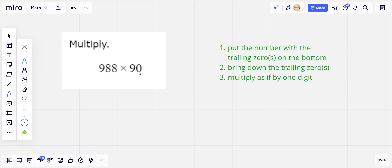If you're like me though, when you see trailing zeros you get pretty happy and excited about that because you know that is going to make the problem much easier. So if you see a number with a trailing zero in your multiplication problem, when you set it up put that one on the bottom. So we're going to put 988 on the top and 90 on the bottom.